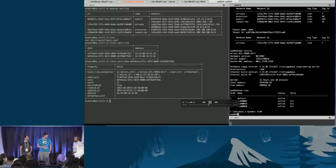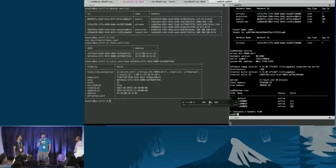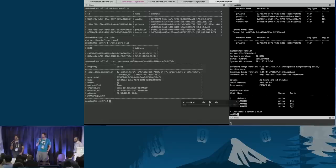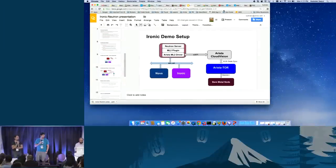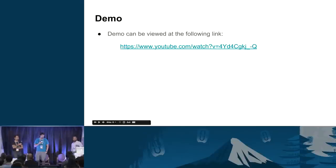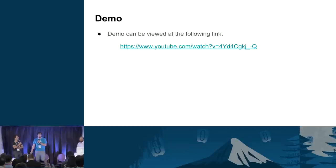In the interest of time, we're going to cut off the demo - watching VLANs change on a switch isn't that interesting anyway. The demo is on YouTube and here's the link so you can play it. A couple quick things: this is not in the Liberty release, it will be in Mitaka - it was close but not quite there. There's a lot of future work to do yet. With that, we're sure there are a million questions - feel free to come up to the mic or just yell.